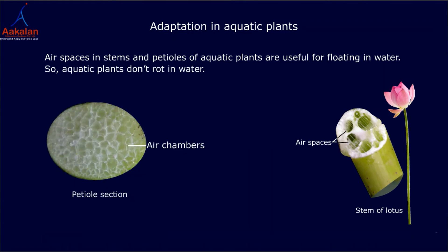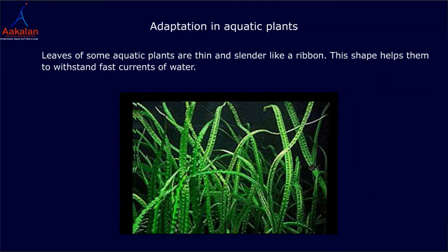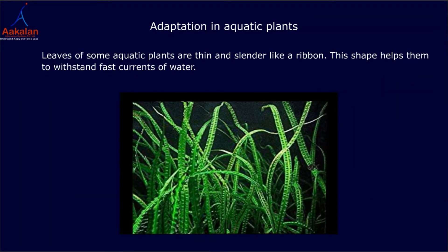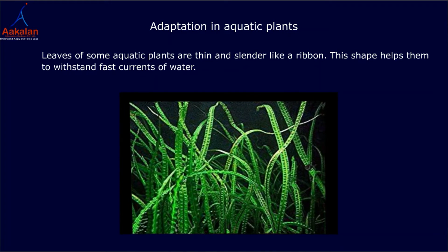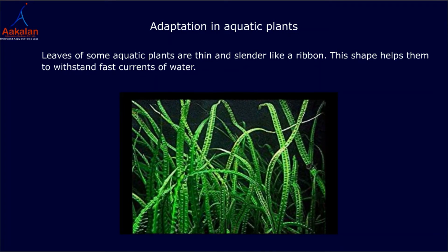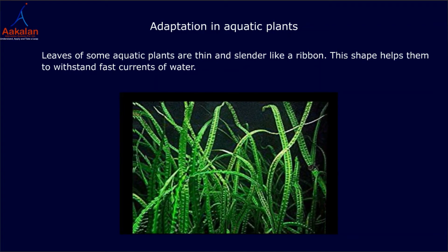So, leaves and stems of aquatic plants don't rot in water. Leaves of aquatic plants are thin and slender like a ribbon. This shape helps them to withstand fast currents of water.